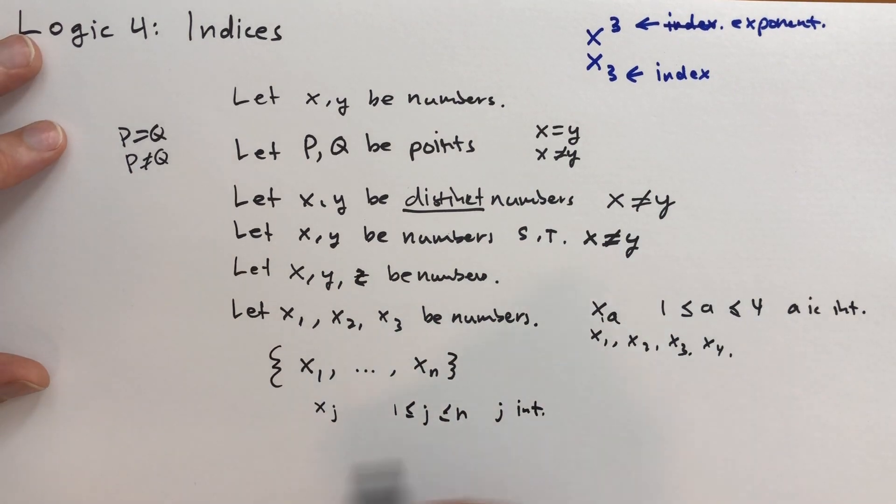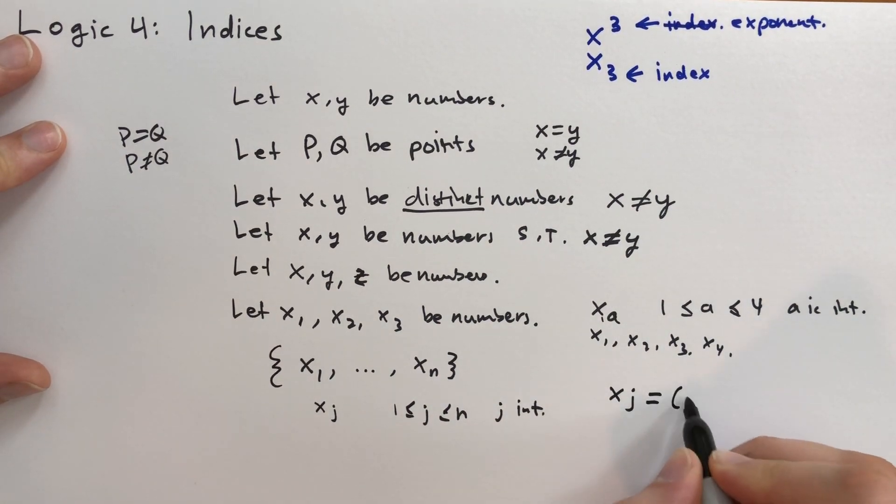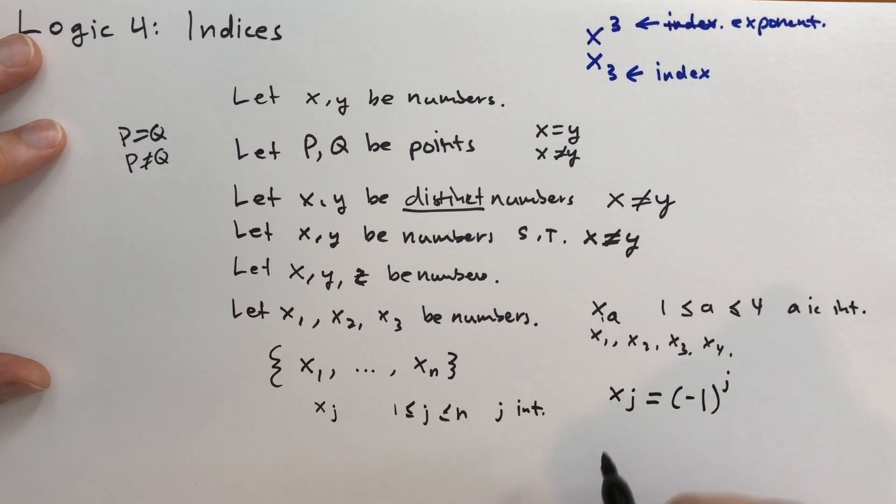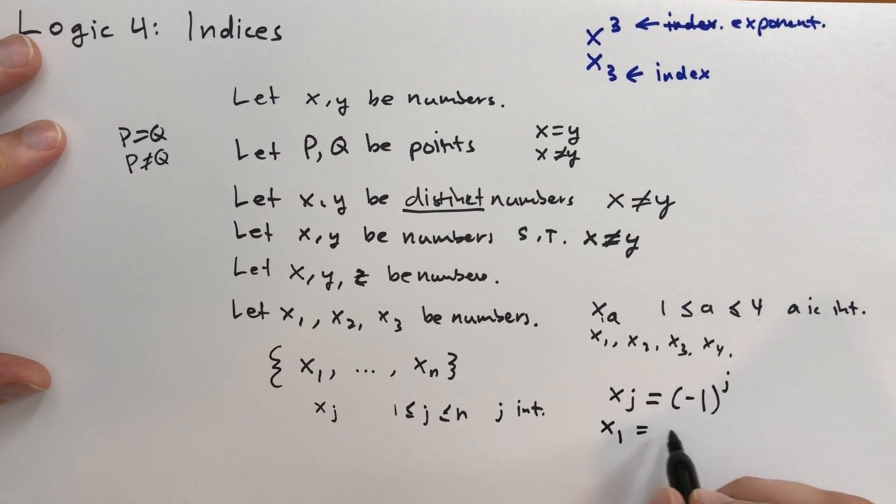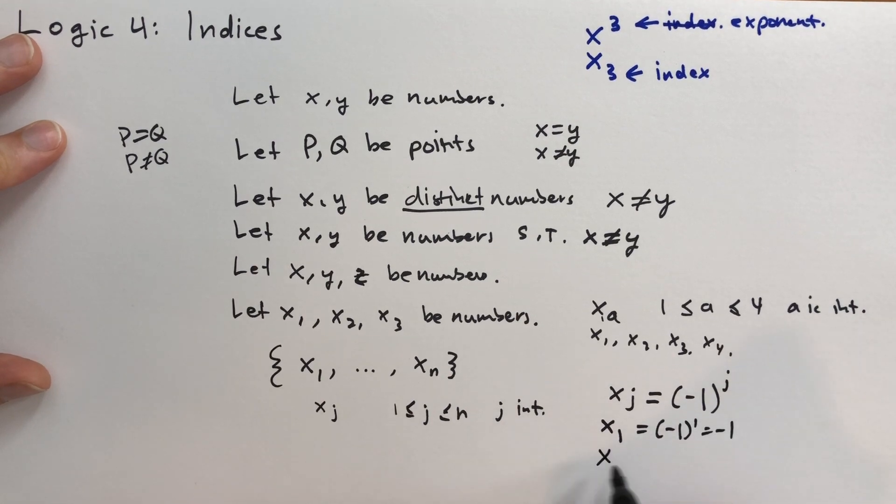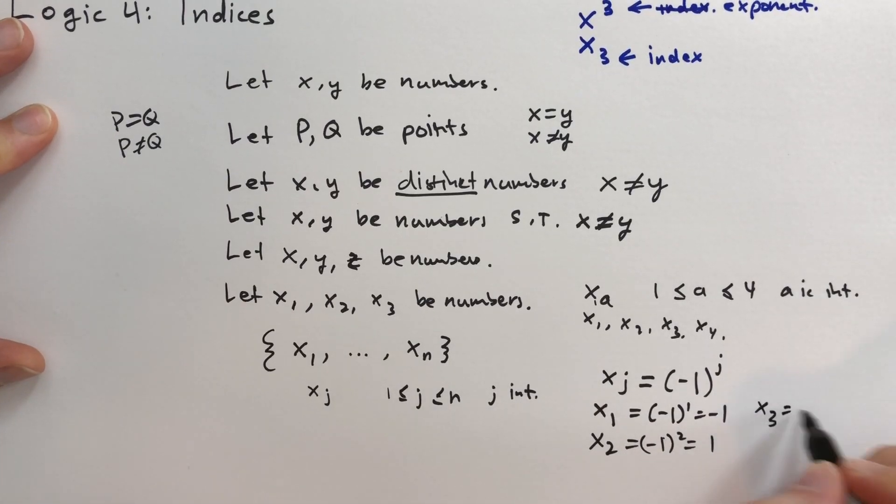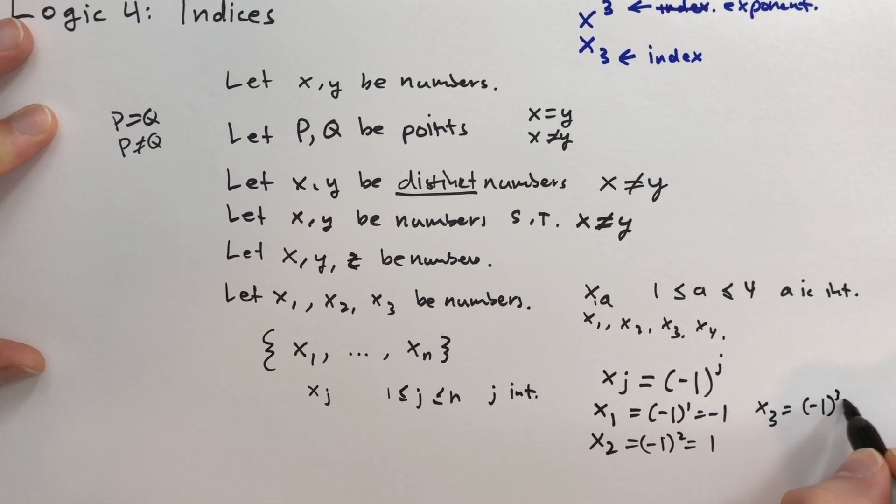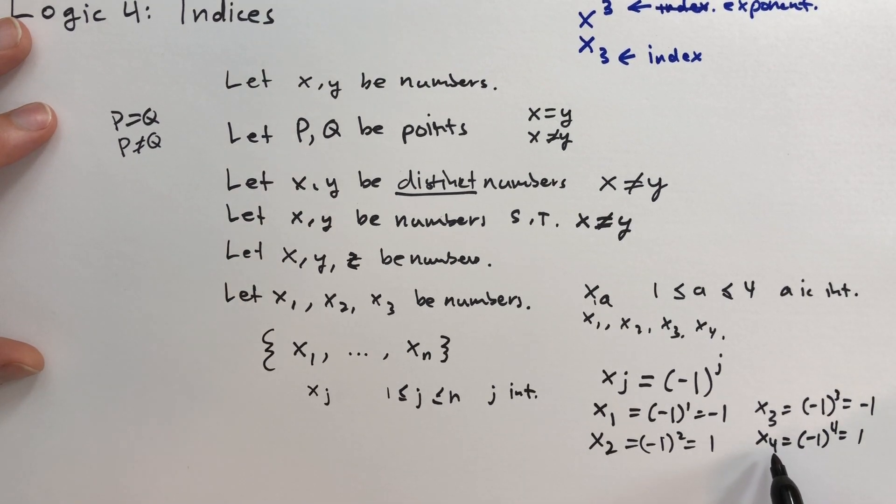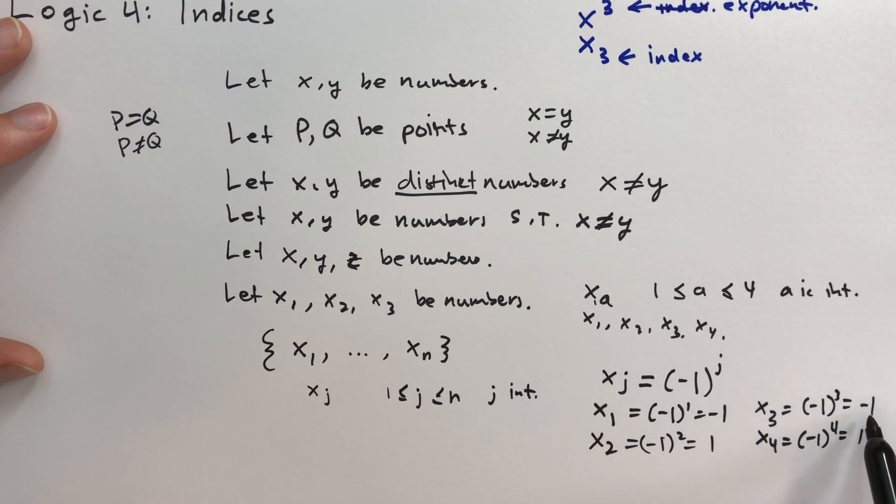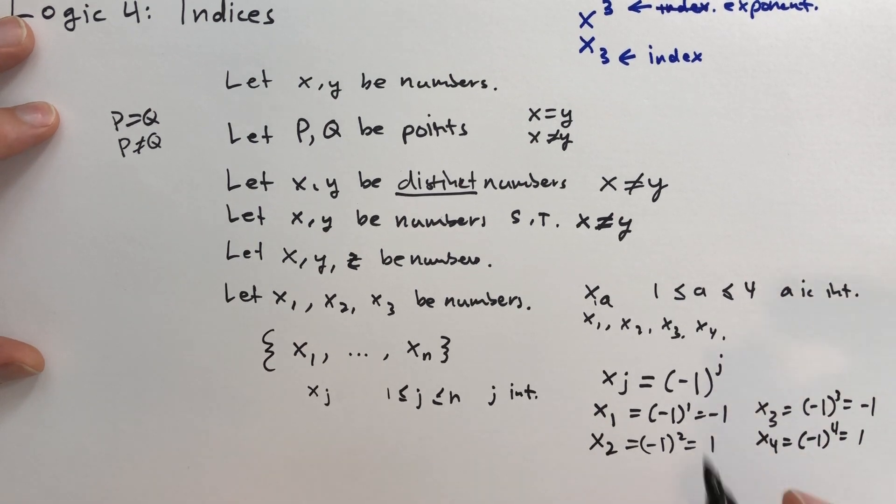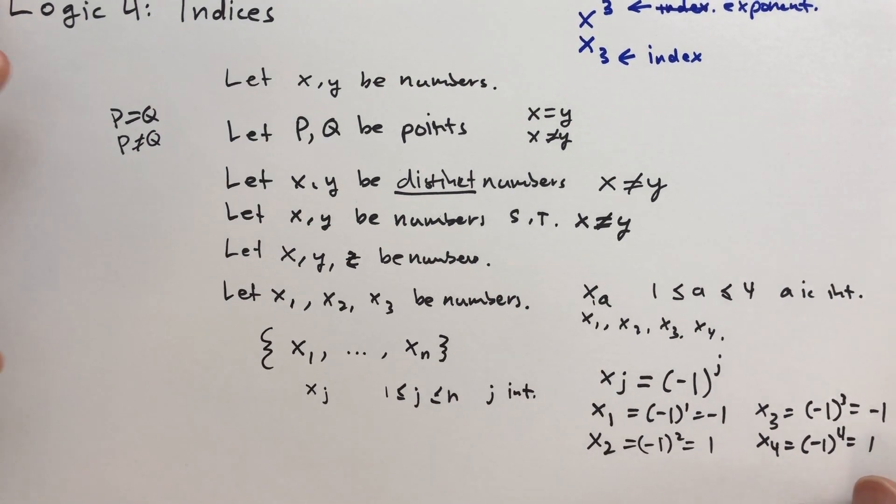So for instance, we could say that xj is defined to be minus 1 to the jth power. And so x1 would be minus 1 to the first power, which is just minus 1. x2 would be minus 1 to the second power, which is just 1. And x3 is equal to minus 1 to the third power, which is just minus 1. And x4 is equal to minus 1 to the fourth power, which is just 1. And you can see there's a pattern here, where when the subscript is odd, it's negative 1. And when the subscript is even, it's positive 1.